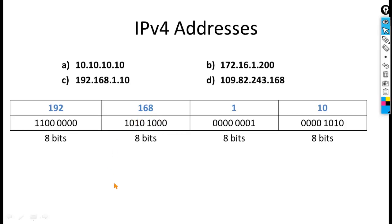In this slide we saw IP addresses in decimal notation and in binary form as well. This value is the binary of 192, this value is the binary of 168, and so on. In the next slides we are going to learn how to convert a decimal number into binary and a binary number into decimal.